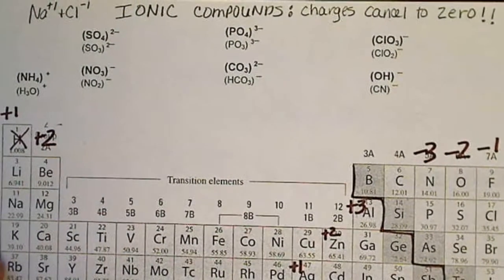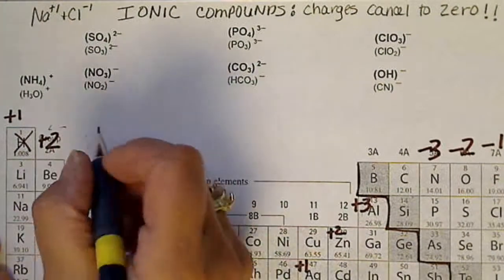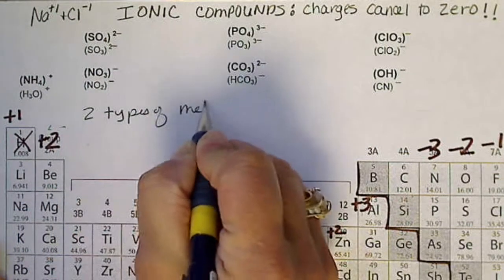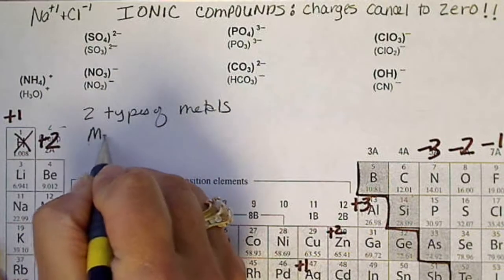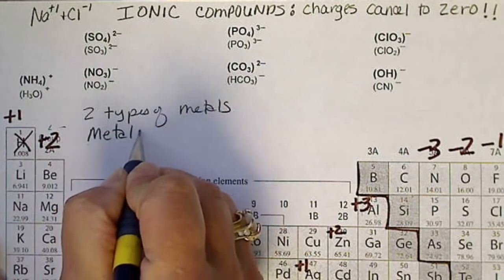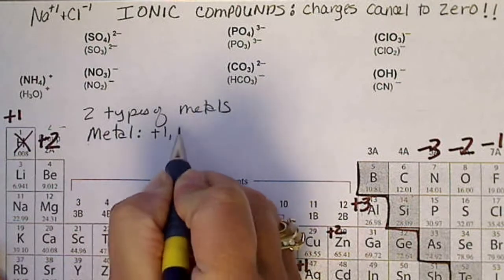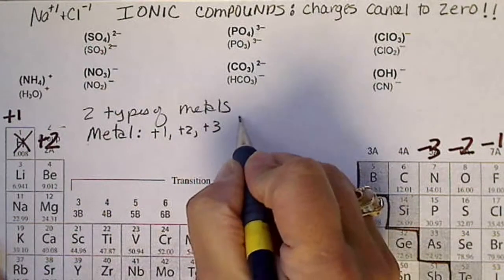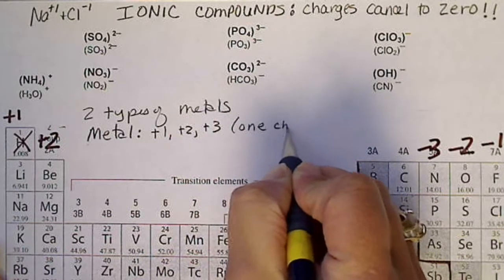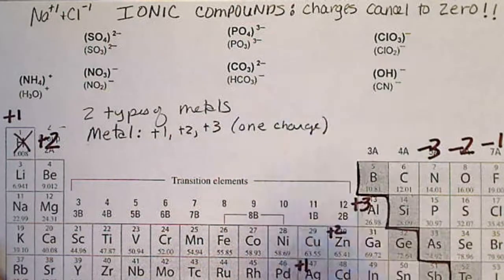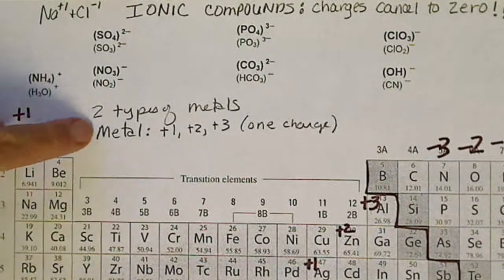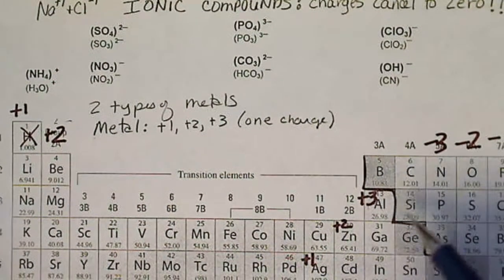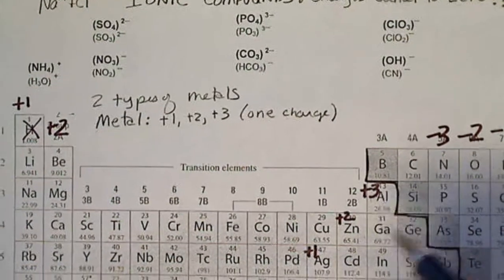There are two types of metals. The first type I'll call a simple metal — this is a metal that always has a plus one, a plus two, or a plus three charge. In other words, there's only one possible charge on it. A simple metal is one found in column one, column two, or aluminum, which is plus three, or zinc or silver.